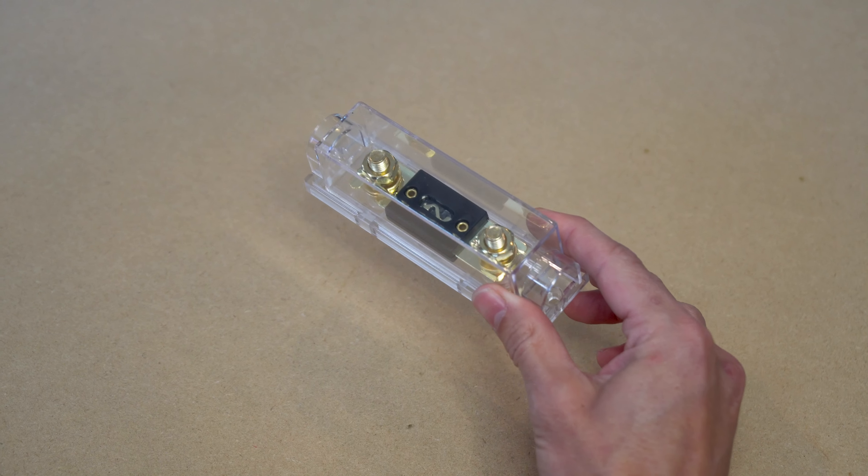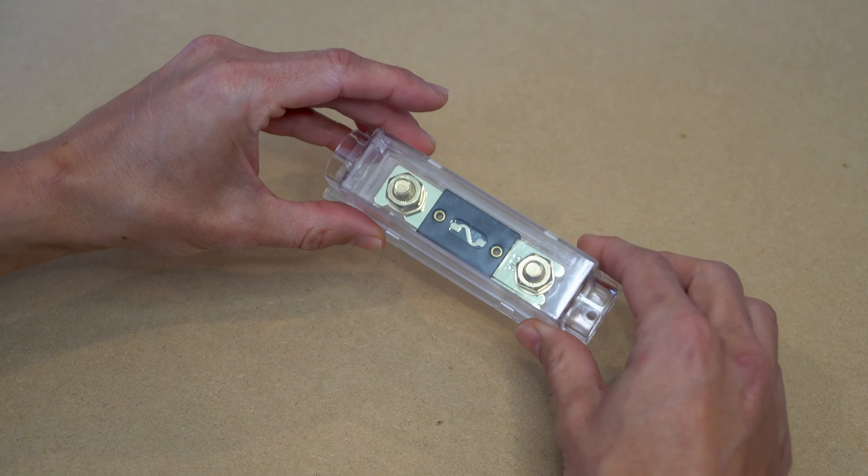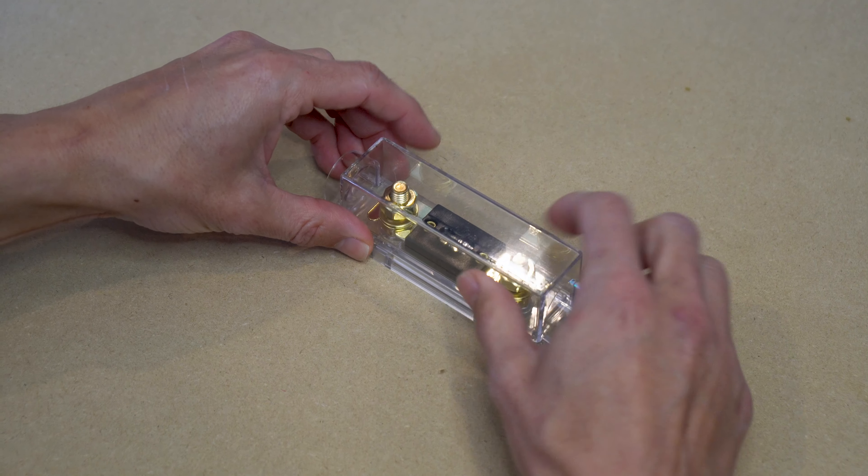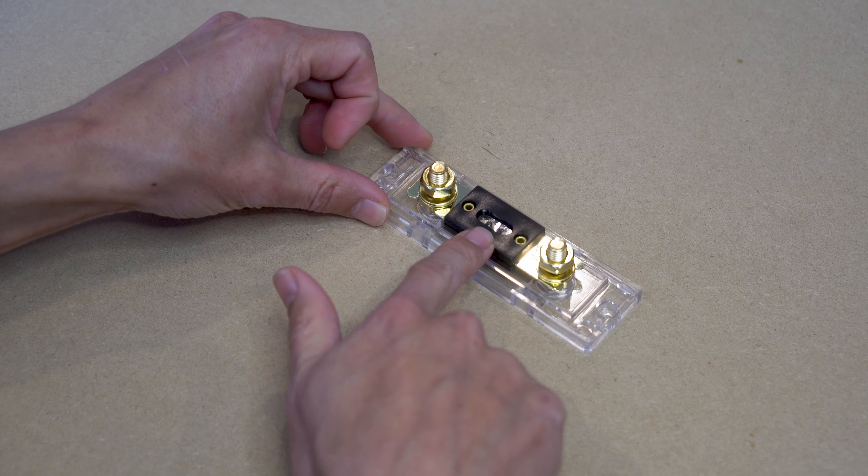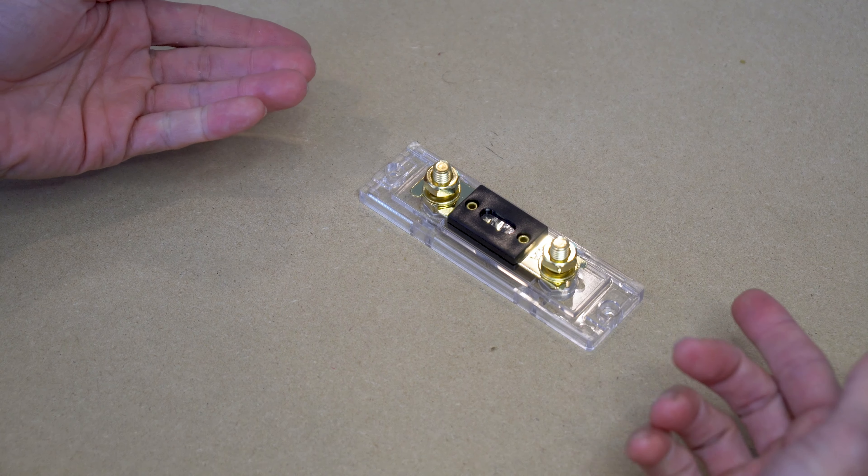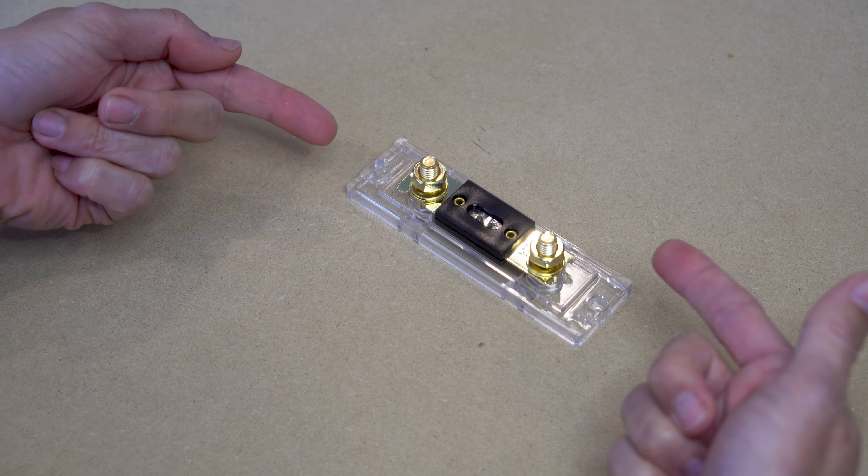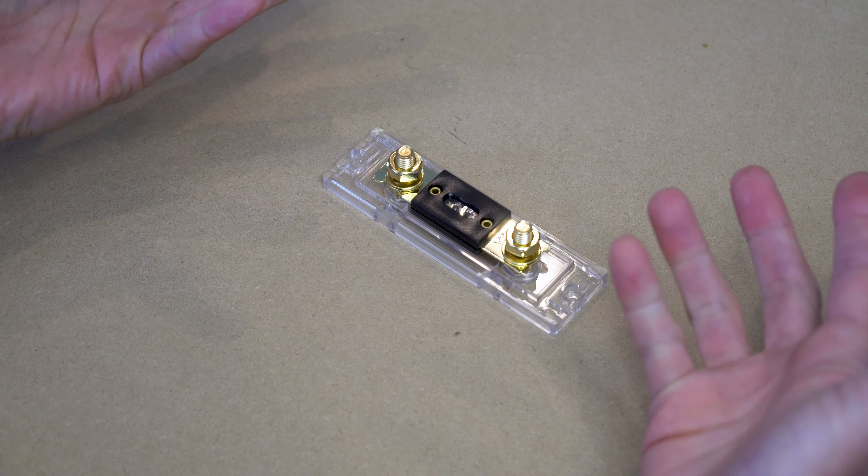This is the third ANL fuse that we've handled and it's pretty standard. It's got a nice thick plastic casing, brass terminal posts with the fuse already installed. Unfortunately it doesn't come with any screws to mount your fuse to the surface material so you'll need to get some yourself.